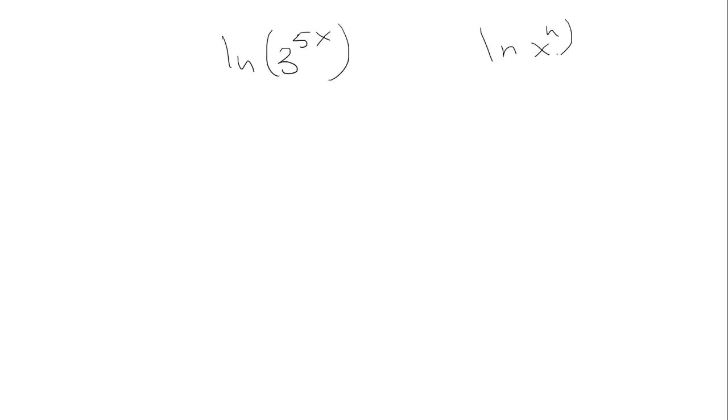So if I have ln of x to the n, that's the same thing as bringing the exponent in front and multiplying by ln of x. So in this example, the exponent is 5x, so we're going to bring it out in front and multiply by ln 3.